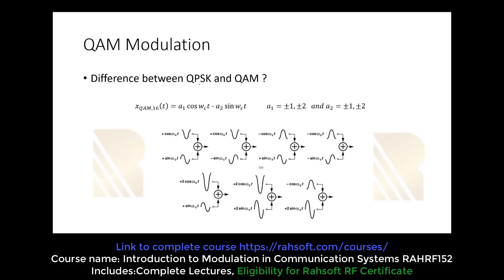For QPSK, the output is a1·cos(ωc·t) minus a2·sin(ωc·t). Reviewing QPSK: a1 and a2 — also called I and Q — each take values of plus or minus 1. The absolute value of a1 equals that of a2, and that is why the amplitude does not change in QPSK; we are only changing the phase.